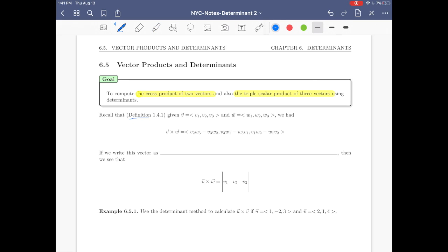Recall that in definition 1.4.1 in chapter one, given the vector v with coordinates v1 v2 v3 and w with coordinates w1 w2 w3, we had the cross product of v and w was a vector with coordinates v2w3 minus v3w2, v3w1 minus w3v1, and the last coordinate was v1w2 minus w1v2.